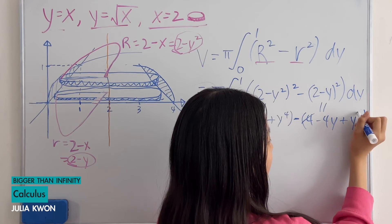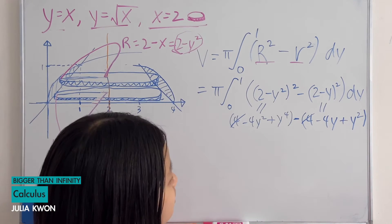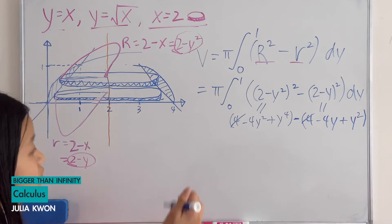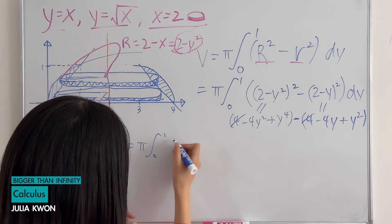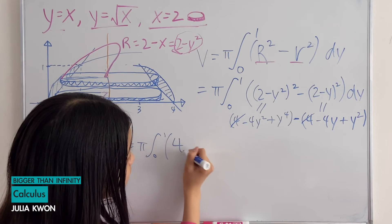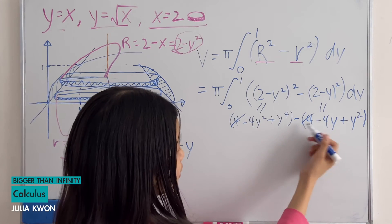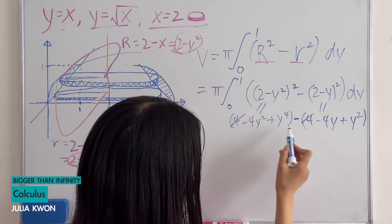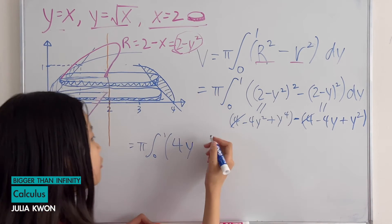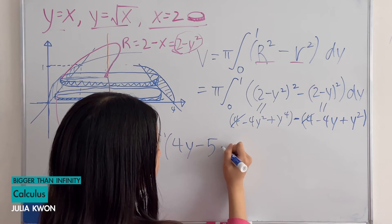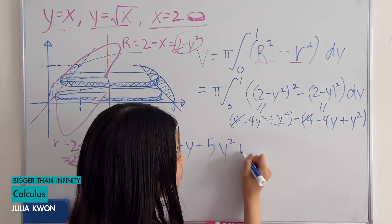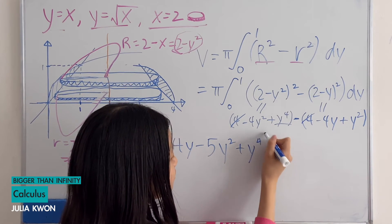The y squared term should be y to the power of 2. Simplifying: the 4's cancel, and combining terms we get 4y from the negative negative, then negative 4y squared minus y squared gives negative 5y squared, plus y to the 4th. So the integrand simplifies to 4y minus 5y squared plus y to the 4th dy.